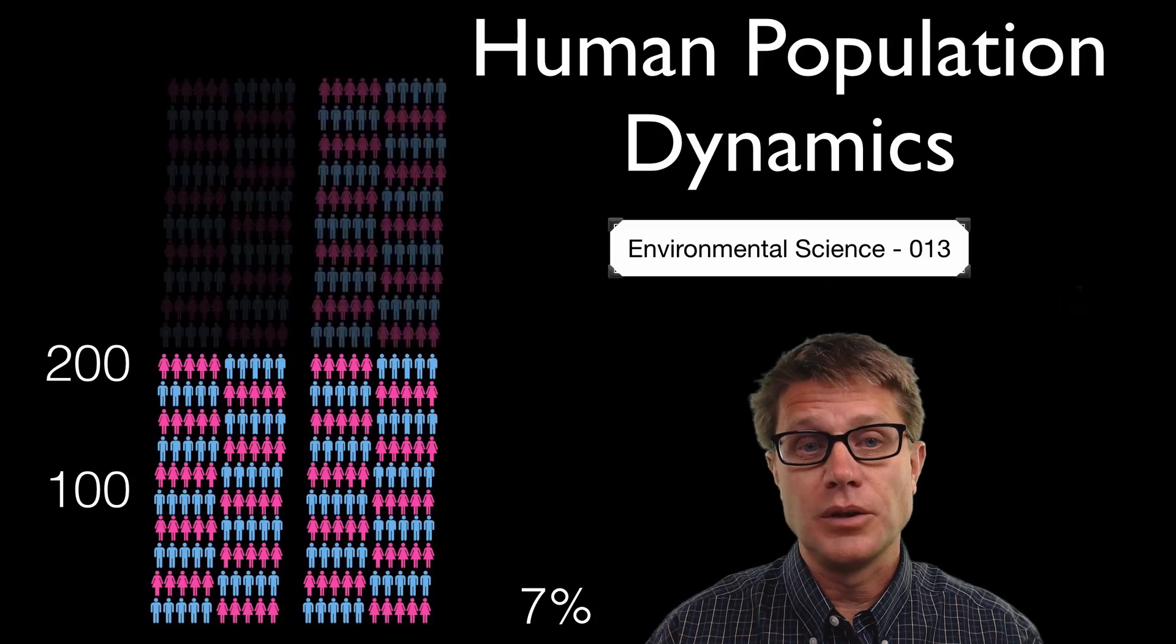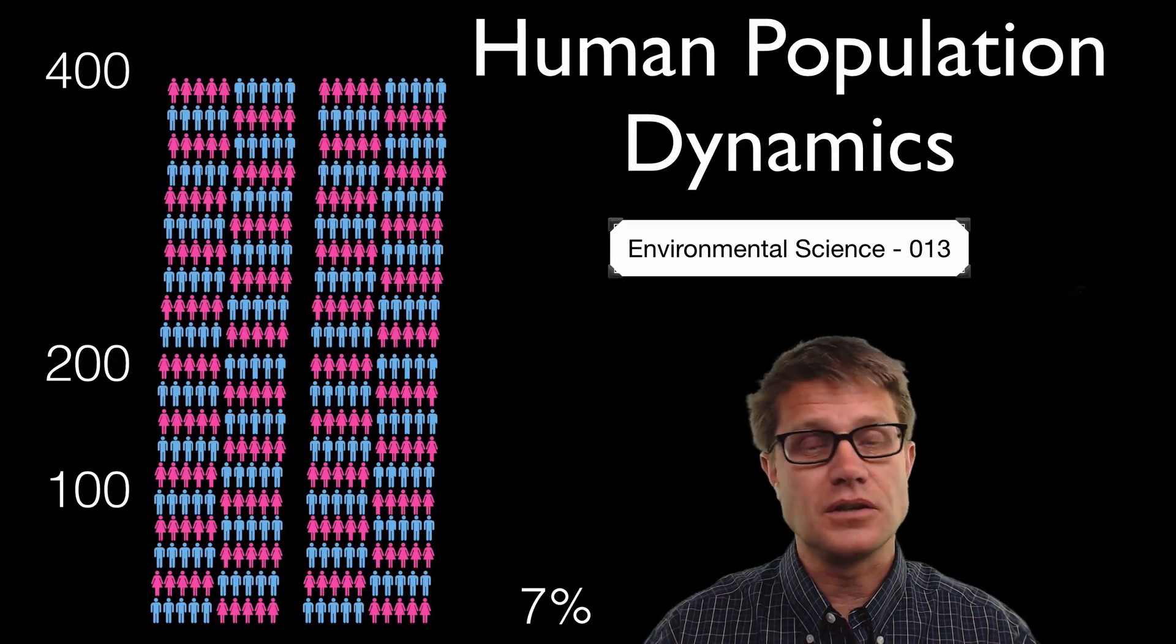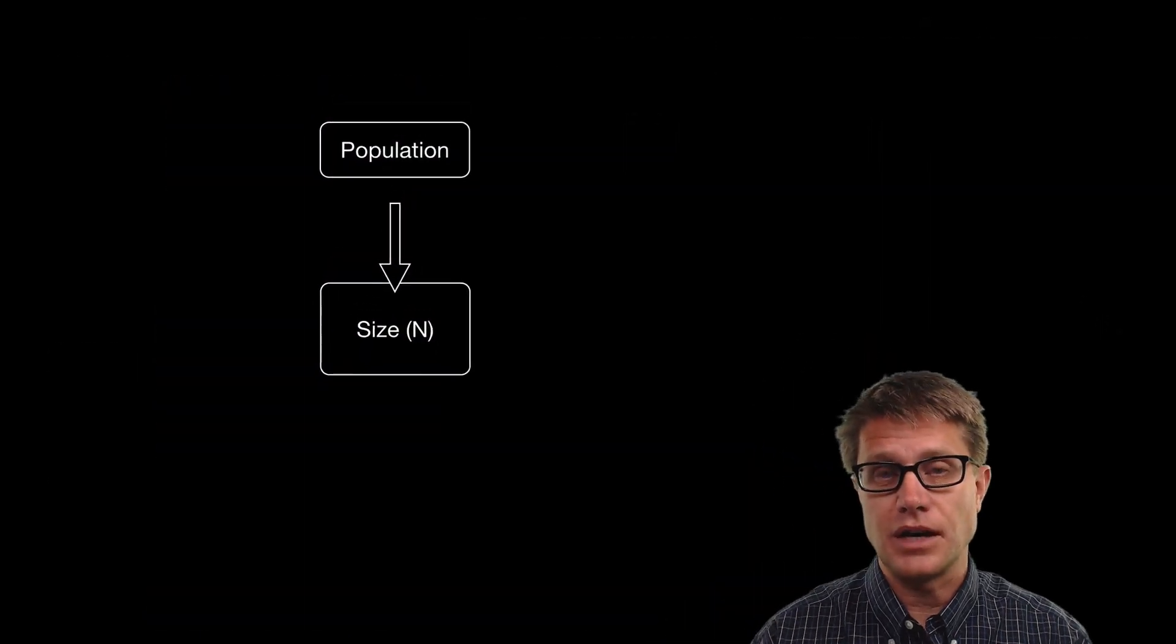How long is it going to take you to double it again from 200 to 400? It is going to take another 10 years. And so you start to see this exponential growth of the population over time.